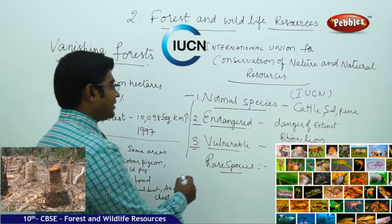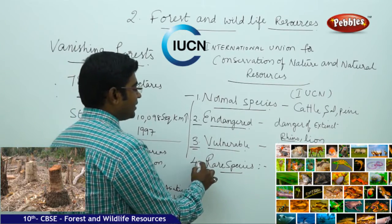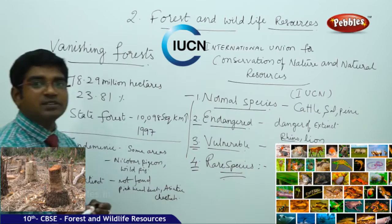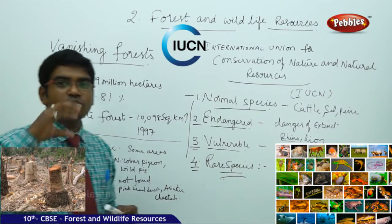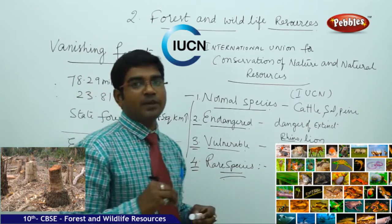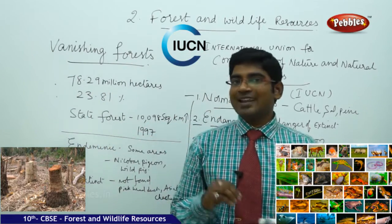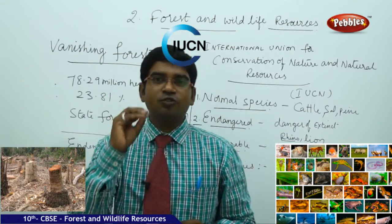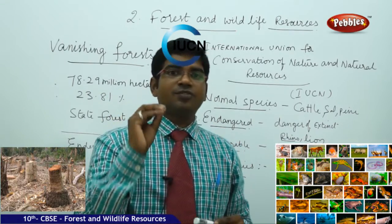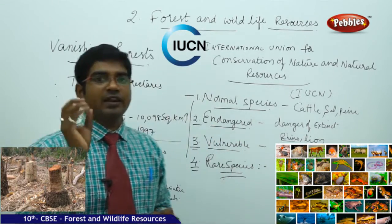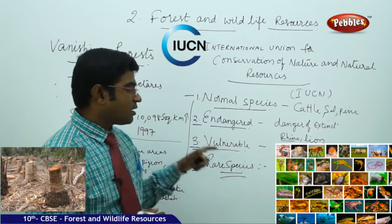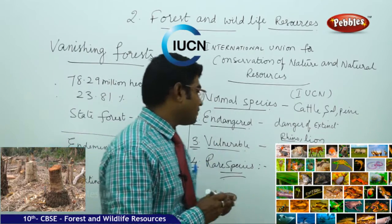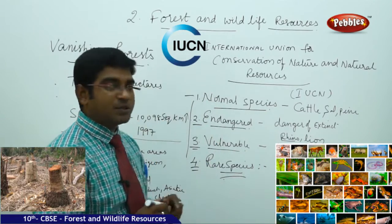The fourth category is rare species. Rare species are found in small populations — not in large numbers at normal levels, but in very few numbers such as 5, 10, 15, 50, or 100. An example of a rare species is the wild Asiatic buffalo.